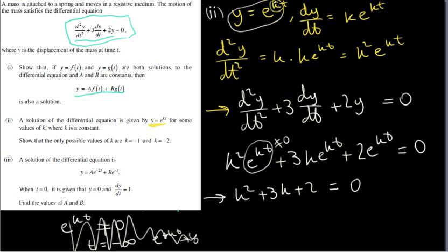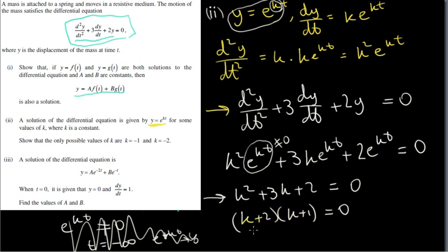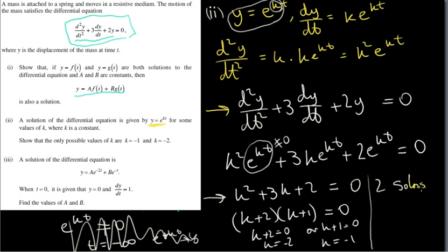So we can solve this quadratic equation. We can factorize it: (k + 2)(k + 1) = 0. Setting each factor equal to zero, we get k = -2, or from k + 1 = 0, we get k = -1. So we have two solutions to the differential equation: y = e^(-2t) and y = e^(-t). These two solutions satisfy our differential equation — if you substitute them in, you'll get zero on the right-hand side.